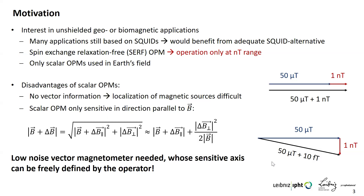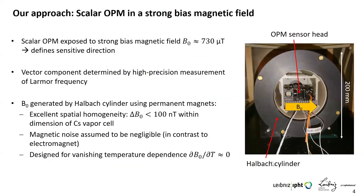What we need is a low-noise vector magnetometer whose sensitive axis is no longer determined by Earth's magnetic field, but can be freely defined by the operator. This is achieved by using a scalar OPM exposed to a strong bias magnetic field whose amplitude is at least one order of magnitude larger than Earth's magnetic field. In this case, the sensitive axis is always defined by the bias field, and the vector component is determined by a high-precision measurement of the Larmor frequency. This bias field is generated by a Halbach cylinder using permanent magnets.